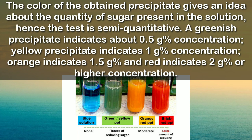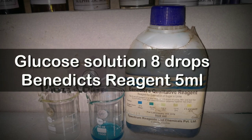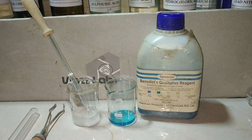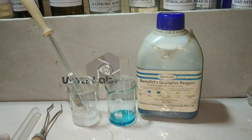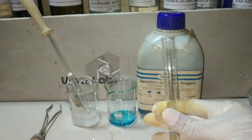This test is actually a semi-quantitative test, which means the color of the precipitate would give us an idea about the concentration of the reducing sugar present in it. Now let us see the materials required: we require glucose solution or any other reducing sugar, and Benedict's reagent.